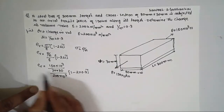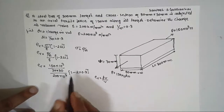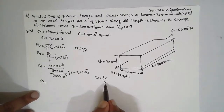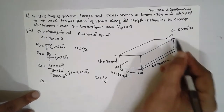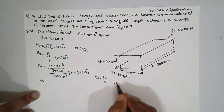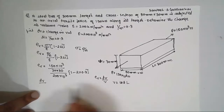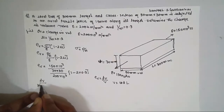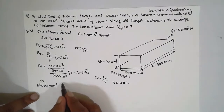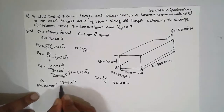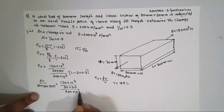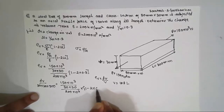Ev is nothing but ΔV/V. We have to find the change in volume ΔV/V. The initial volume V = W × T × L = 30 × 30 × 300. So: 30 × 30 × 300 × ΔV = [150 × 10³] / [30 × 30] / [200 × 10³] × (1 − 2 × 0.3).